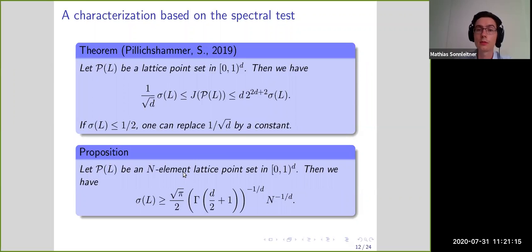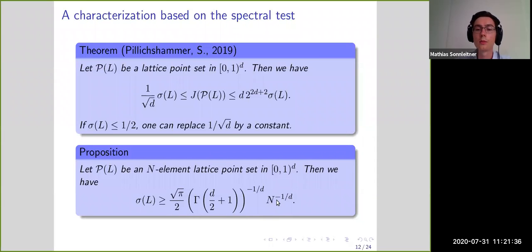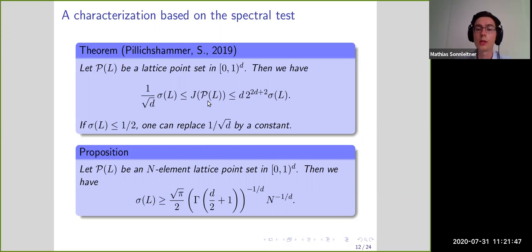There is a lower bound on how small the spectral test can be: for an n-element lattice point set, the spectral test is bounded from below by n to the minus 1/d times some constant. Combining these two bounds, the isotropic discrepancy is lower bounded by n to the minus 1/d times a constant — exactly the result stated before.